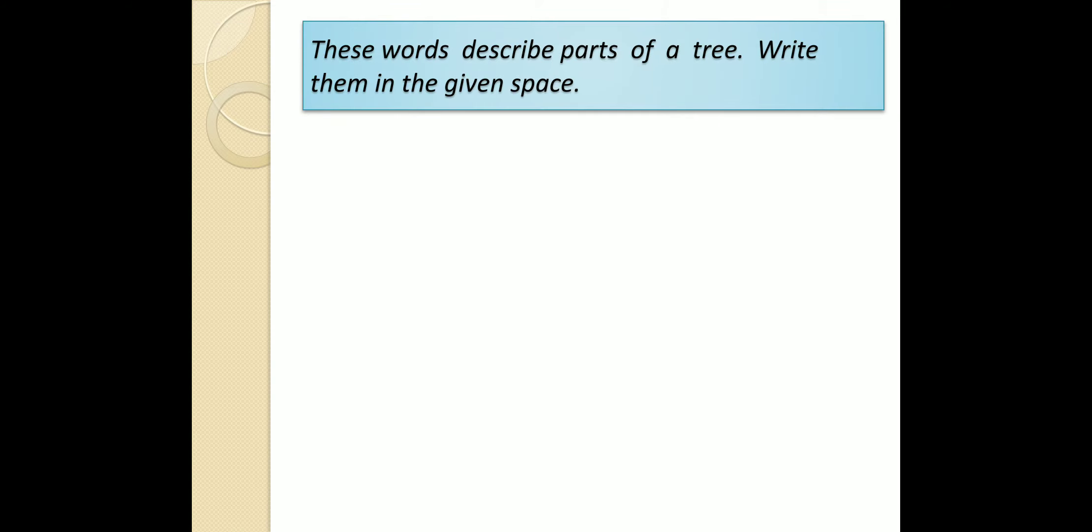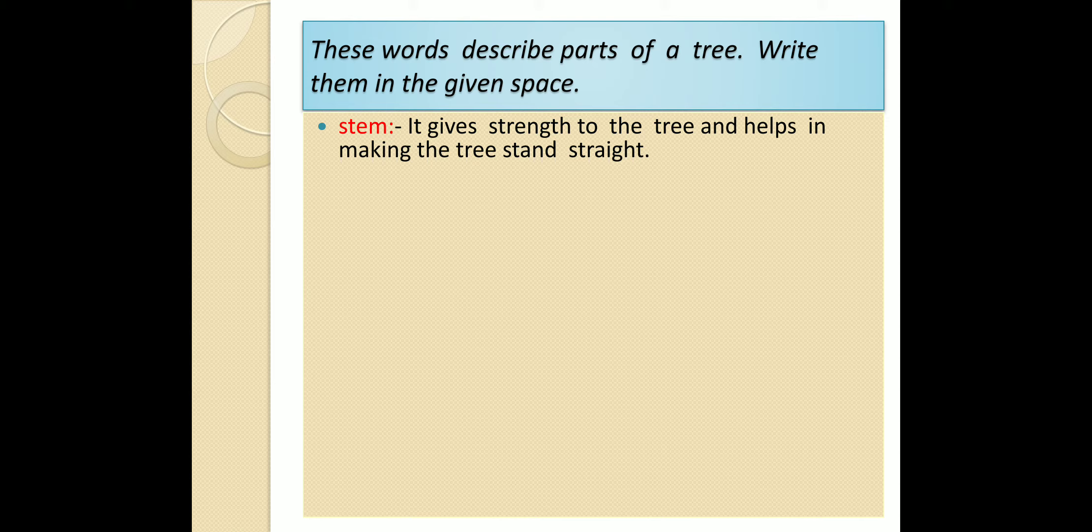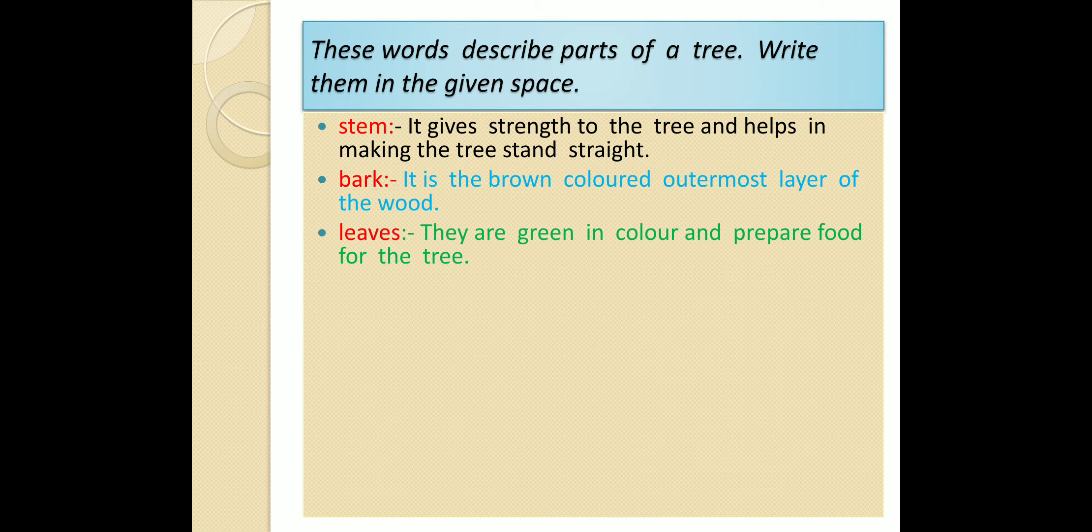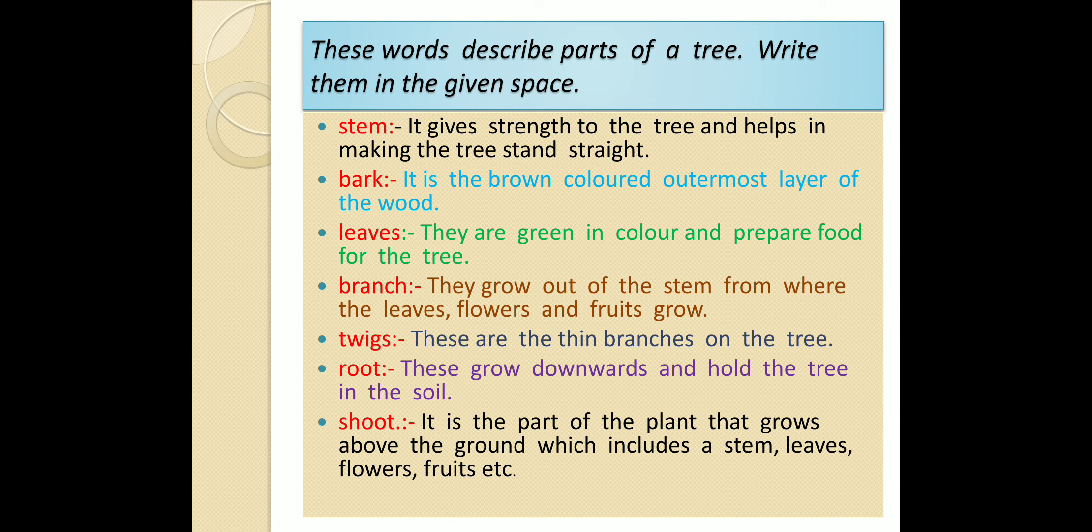So these words describe parts of a tree. Write them in the given space. First, stem: It gives strength to the tree and helps in making the tree stand straight. Bark: It is the brown colored outermost layer of the wood. Leaves: They are green in color and prepare food for the tree. Branch: They grow out of the stem from where the leaves, flowers and fruits grow. Twigs: These are the thin branches on the tree. Root: These grow downwards and hold the tree in the soil. Shoot: It is the part of the plant that grows above the ground which includes a stem, leaves, flowers, fruits etc.